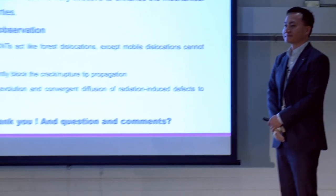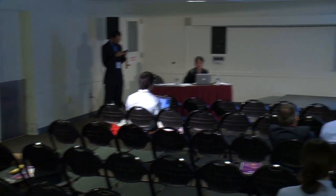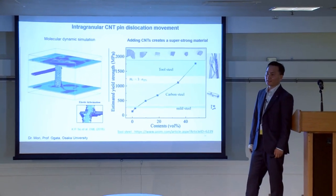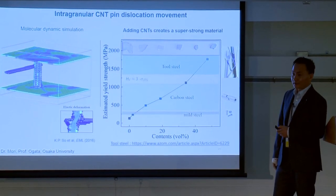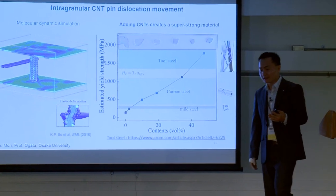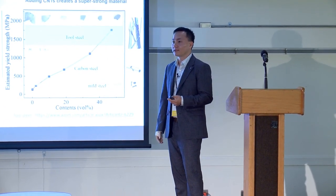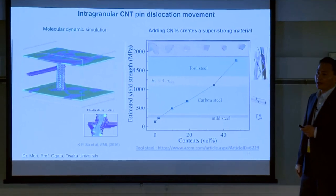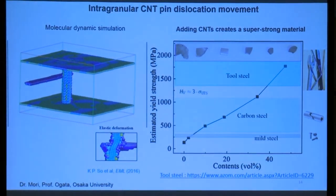During Q&A, a question is raised: one of the slides shows that the addition of carbon nanotubes at 20–40 volume percent dramatically increases strength. The questioner notes that 40 volume percent is a very large fraction and asks whether density would decrease. The speaker confirms yes, density decreases, and explains that nano engineering enables a new synthesis technology without solubility limits — so unlike conventional alloying where exceeding the solubility limit causes unwanted phase precipitation, carbon nanotubes can be incorporated up to 50 volume percent.